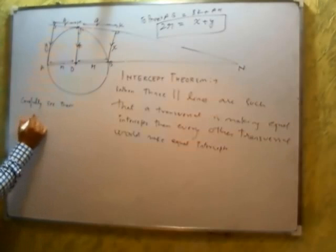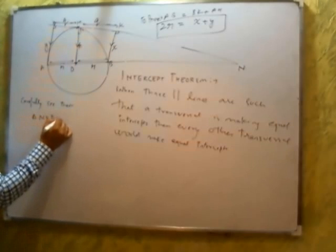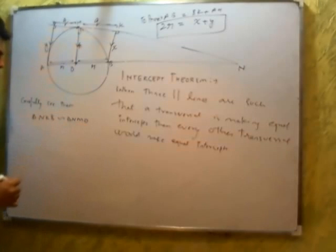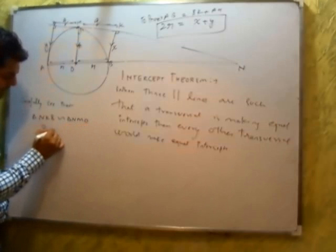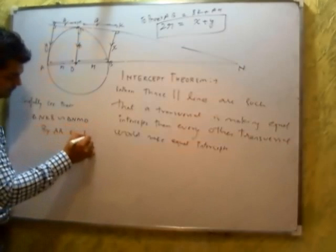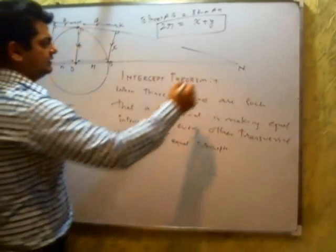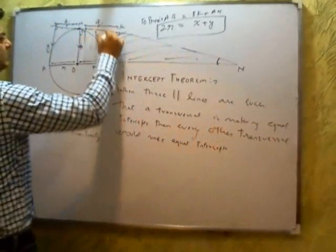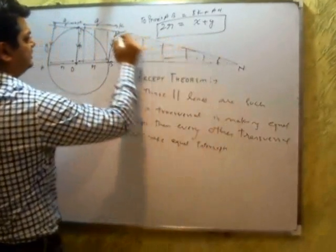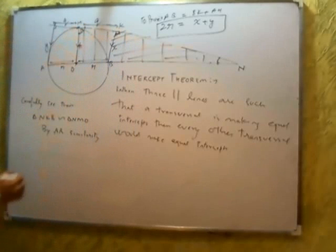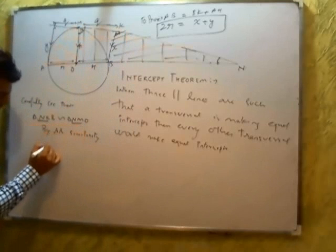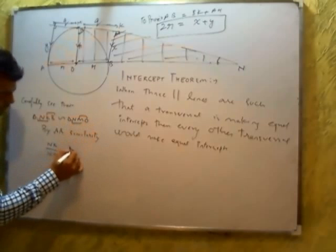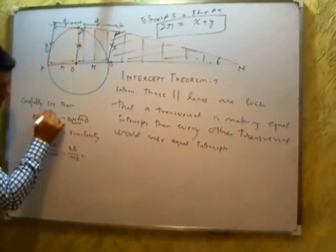And we can say that triangle NKB is similar to triangle NMO by AA similarity, which says this angle equals this angle — 90, 90 — hence AA similarity. And hence NK upon NM equals KB upon MO equals NB upon NO.